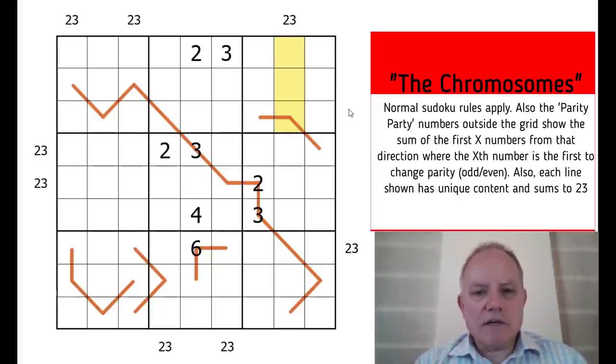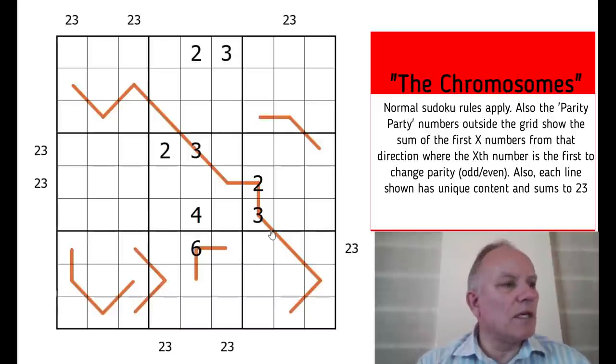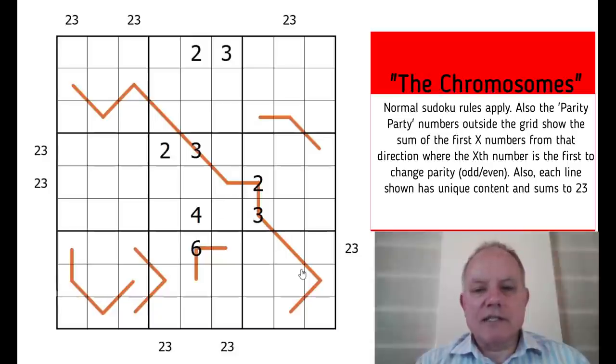Now the other constraint that he's added in, also not a normal one, is there are a number of lines, I think possibly representing chromosome strands here, that add up to 23, the digits along them add up to 23, and each in a unique way. I think the way Philip expressed that was each of these lines has unique content, and I'm going to take that to mean that if one of them is 6, 8, 9, another of them can't be exactly those three digits 6, 8, 9. So those are the two constraints that we're operating on, as well as normal Sudoku rules in this puzzle.